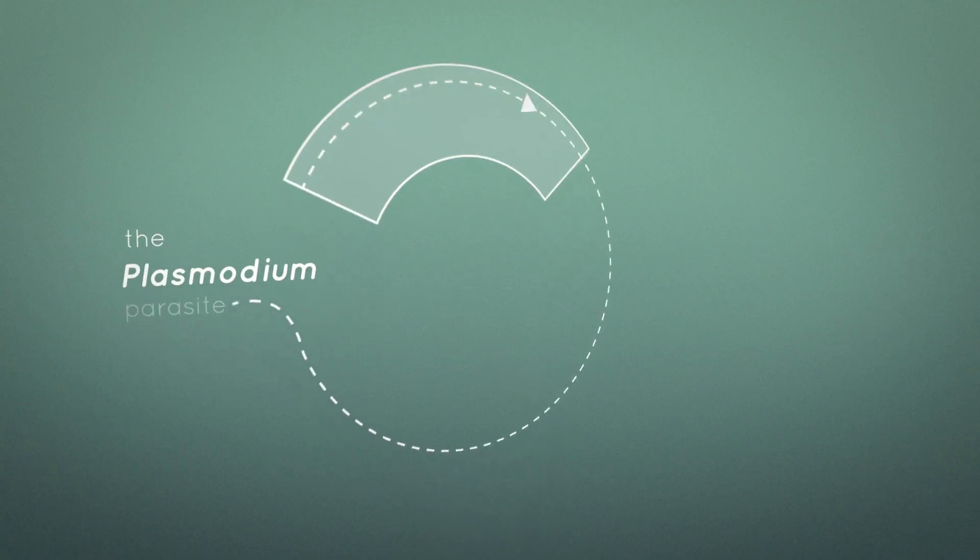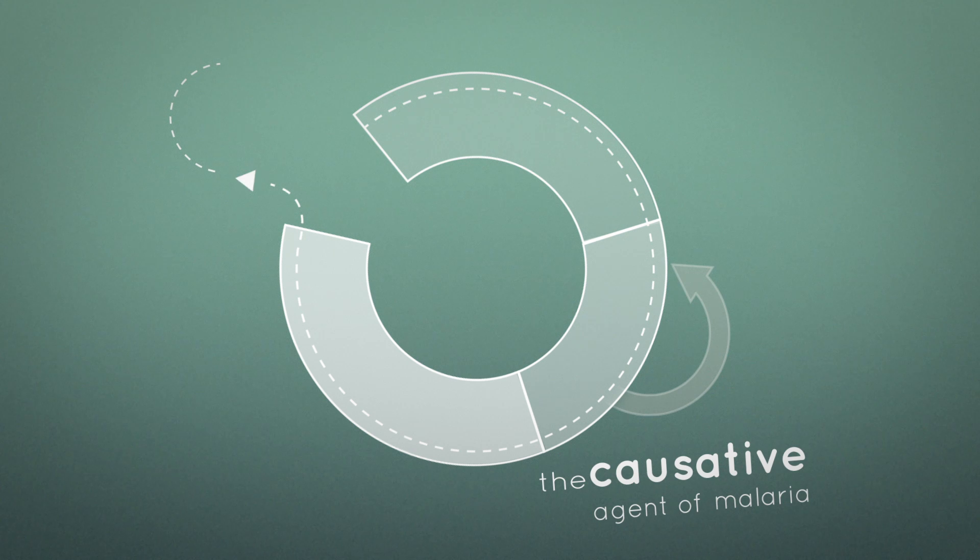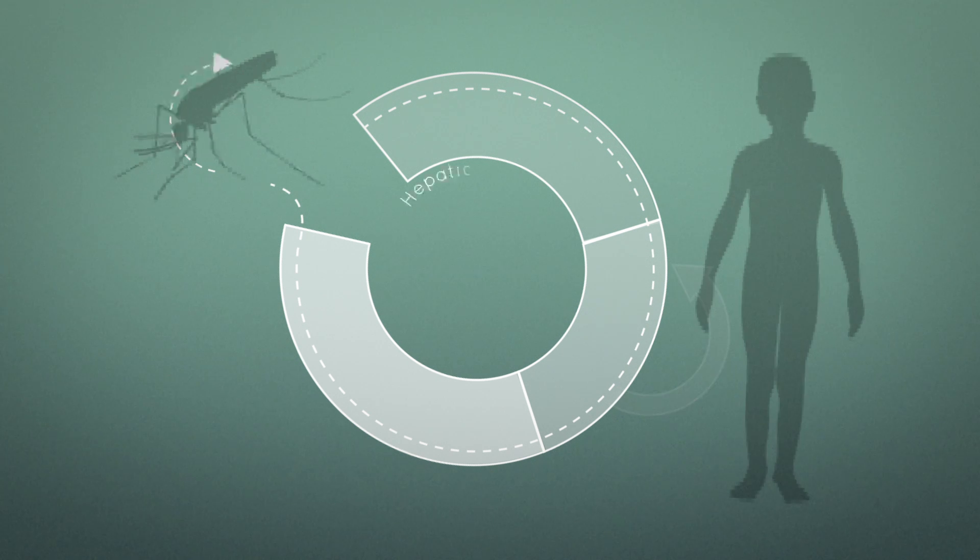The Plasmodium parasite, the causative agent of malaria, lives a complex life cycle in two evolutionary divergent hosts, the human and the mosquito.